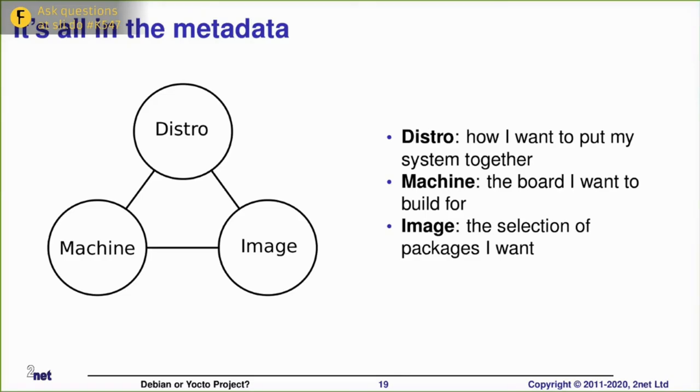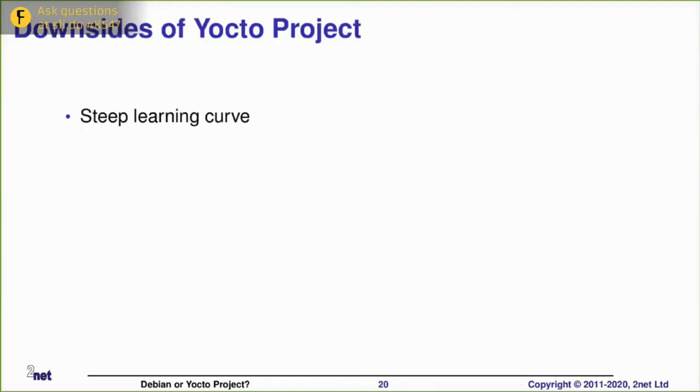Likewise, if I have a bunch of images, maybe a dev image for development and debugging, a production image, an image for a particular customer, then I just need to create the image variable for that. I can keep the distro and machine the same and just pump out the images for the different target use cases. So the whole thing is very scalable. It's easy to customize once you have the basic system set up.